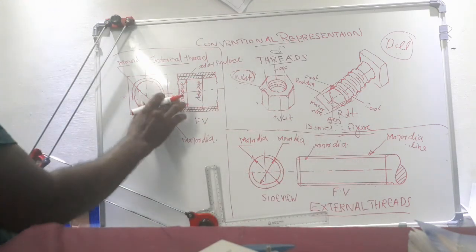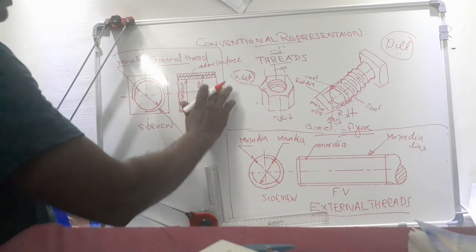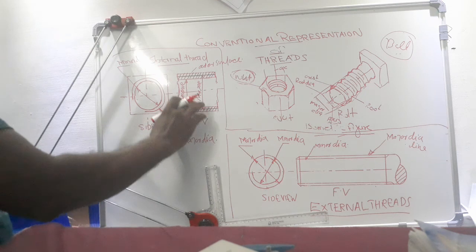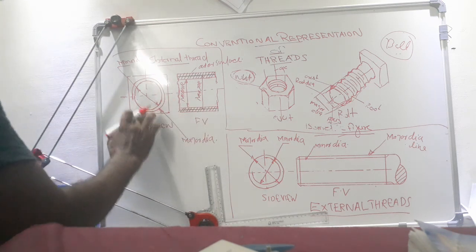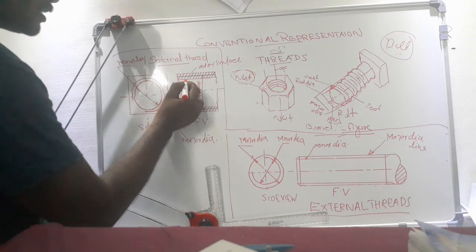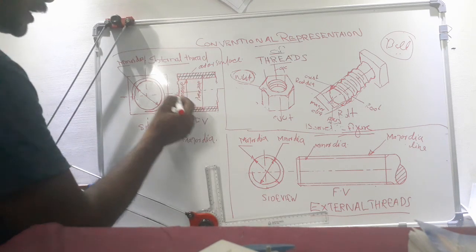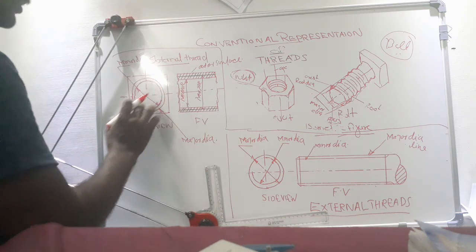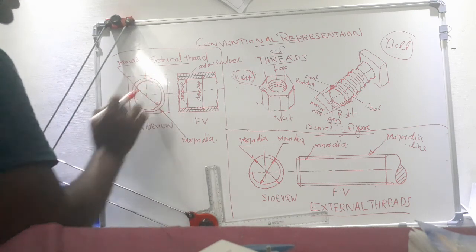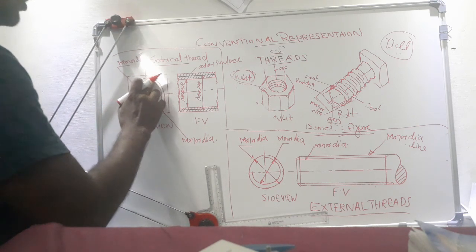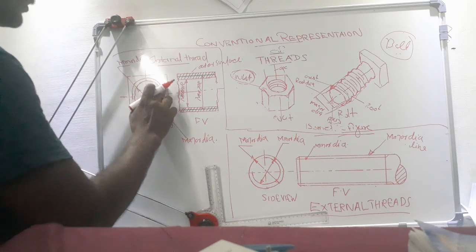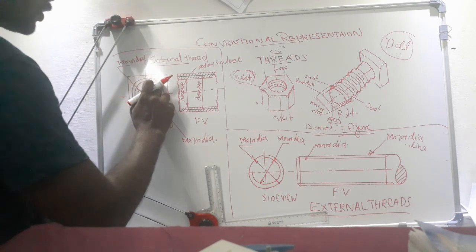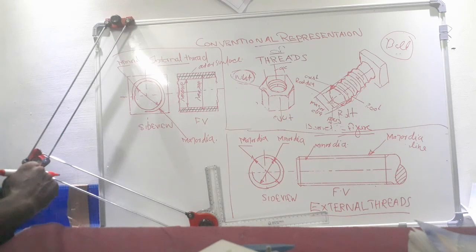In the case of internal threads, this is a picture of the conventional representation of internal threads. This is the front view and this is the side view. In the front view, this diameter is called the minor diameter and this one is the major diameter. In the side view, there are two circles — one is a full circle and another is a 3/4 circle. The 3/4 circle is drawn externally.